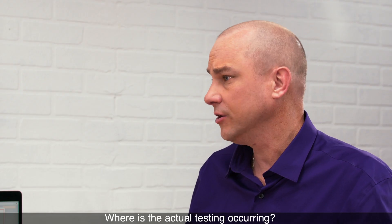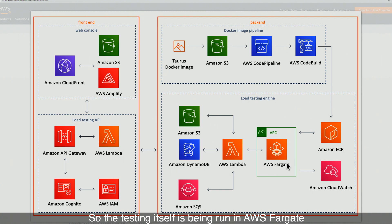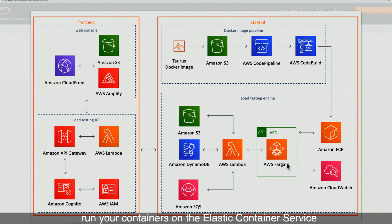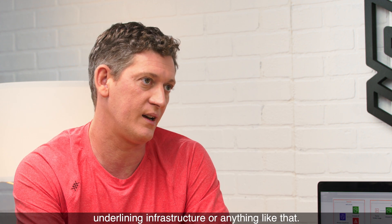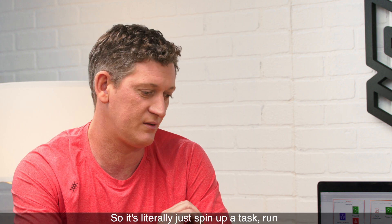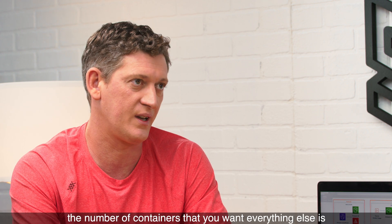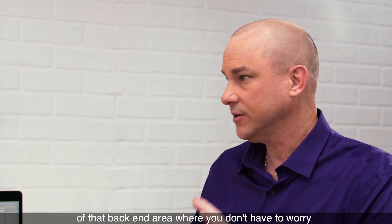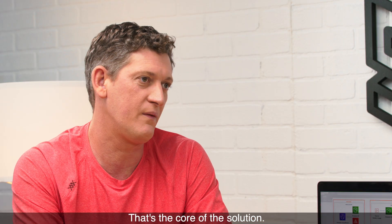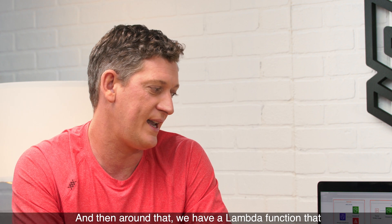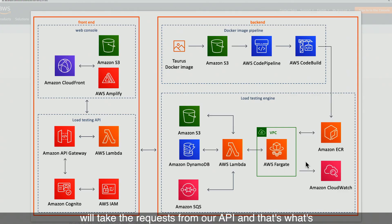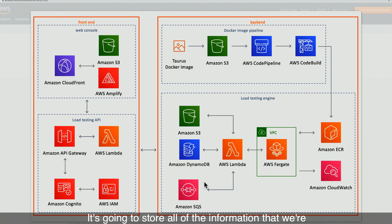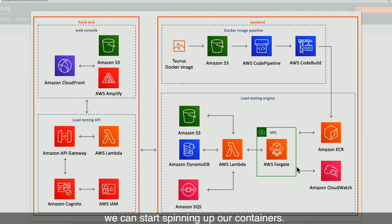The testing itself is being run in AWS Fargate. AWS Fargate is a managed service that lets you run your containers on the Elastic Container Service without having to worry about networking or the underlying infrastructure. It's literally just spin up a task, run the number of containers that you want, and everything else is taken care of. Around that, we have a Lambda function that takes the requests from our API and actually runs the tests. It stores a test template in S3, stores all collected information in DynamoDB, and uses SQS to queue up those tasks in AWS Fargate so we can start spinning up containers.